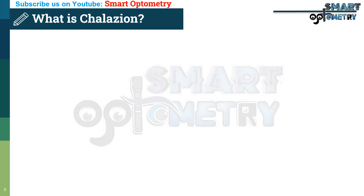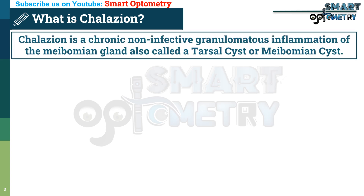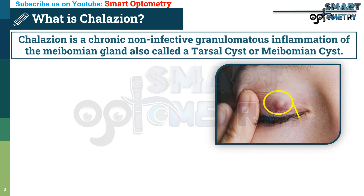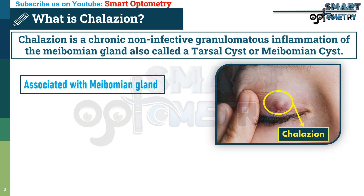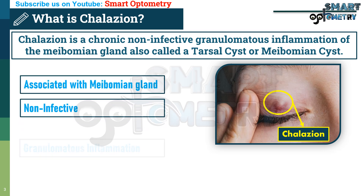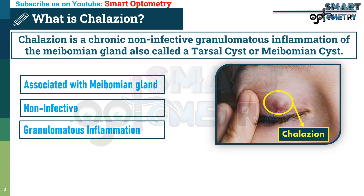What is chalazion? Chalazion is a chronic non-infective granulomatous inflammation of the meibomian gland, also called a tarsal cyst or meibomian cyst. From the definition, three things need to be understood: chalazion is associated with the meibomian gland, chalazion is non-infective, and chalazion is granulomatous inflammation.